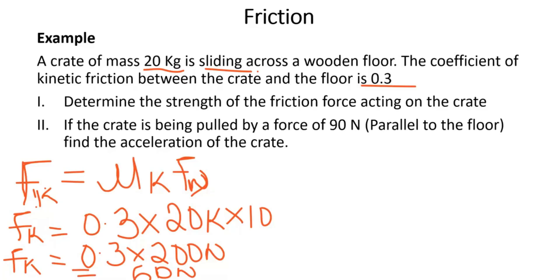The normal force was 200 Newton, but the friction has reduced the effective force to 60 Newton. That is why whenever it is raining or there's snowfall, you are advised to drive slowly — because of the snow on the floor, the friction can cause accidents. So it's safer to drive slow.